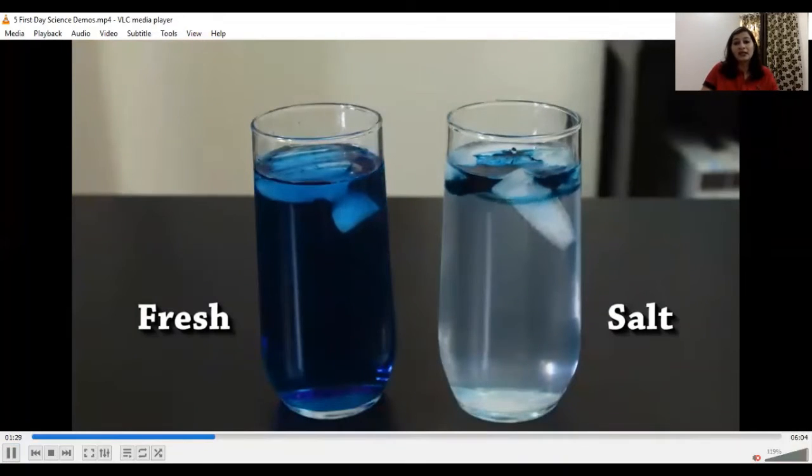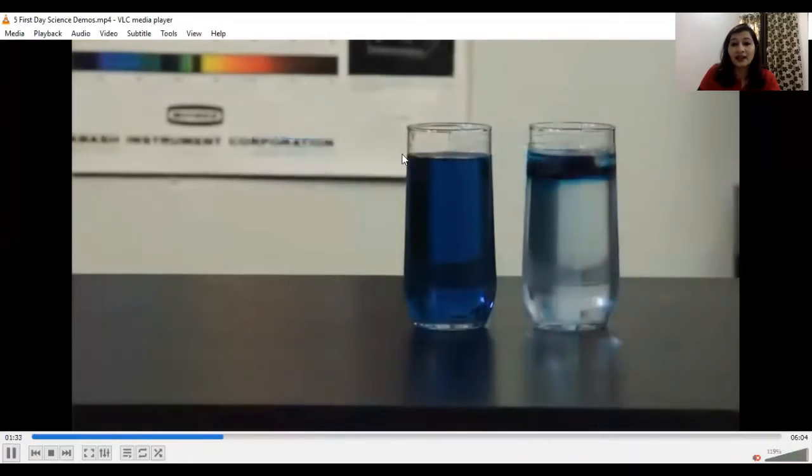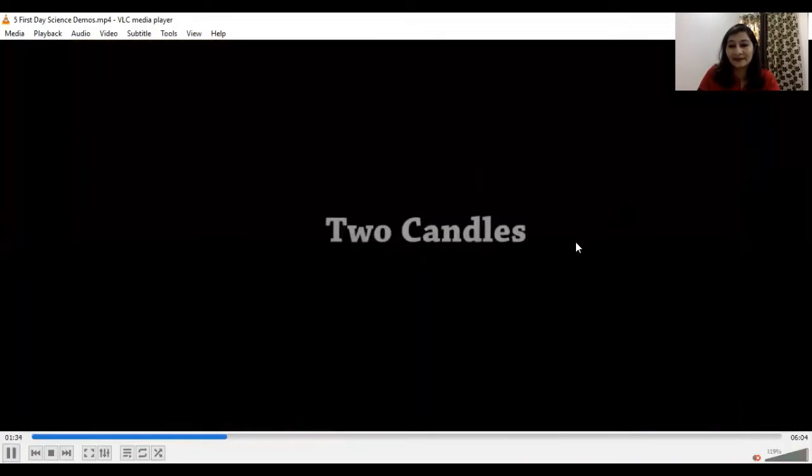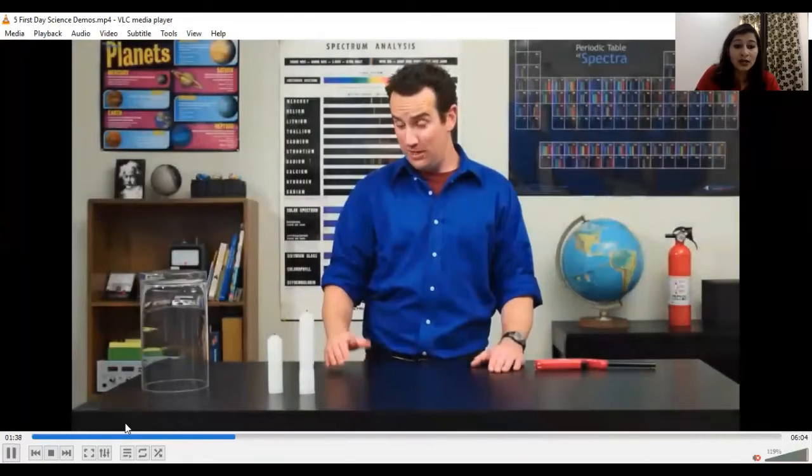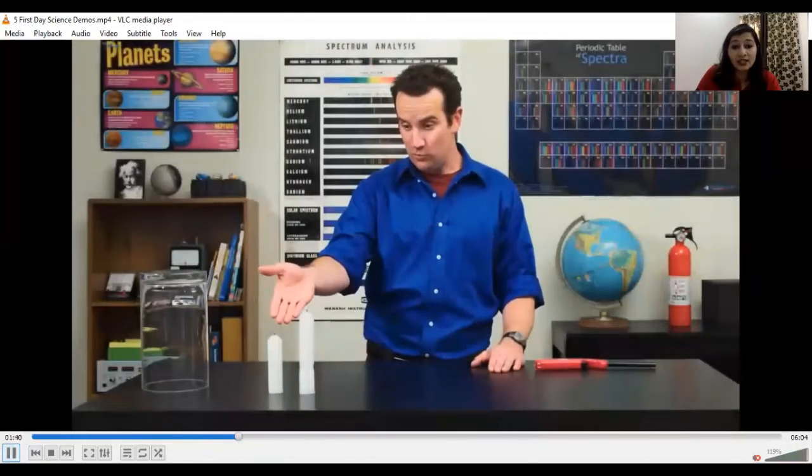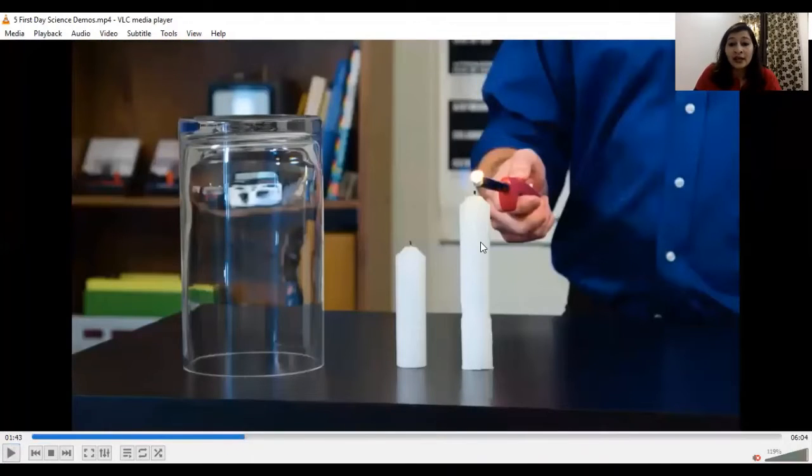Now you can see the color is stuck here. Next is the two candles experiment. We will take two candles - one is taller and the other is shorter. Since childhood we have done this kind of experiment. We used to take one candle and put a jar on it, and then we used to wait to see how long the candle will take to blow out.